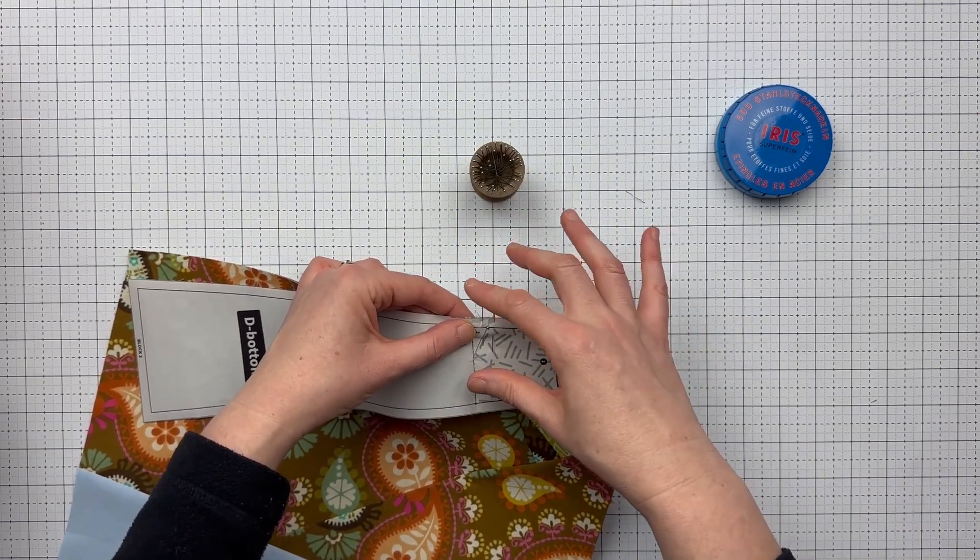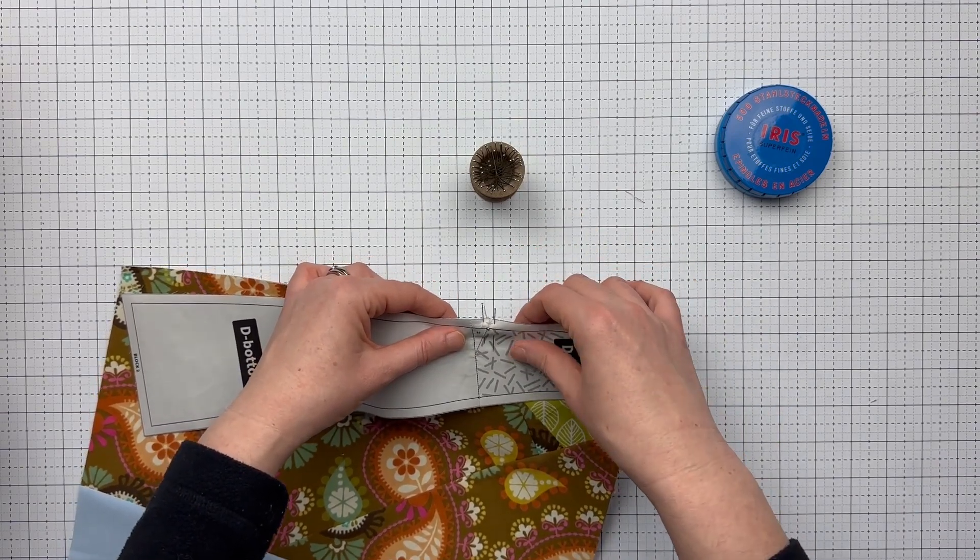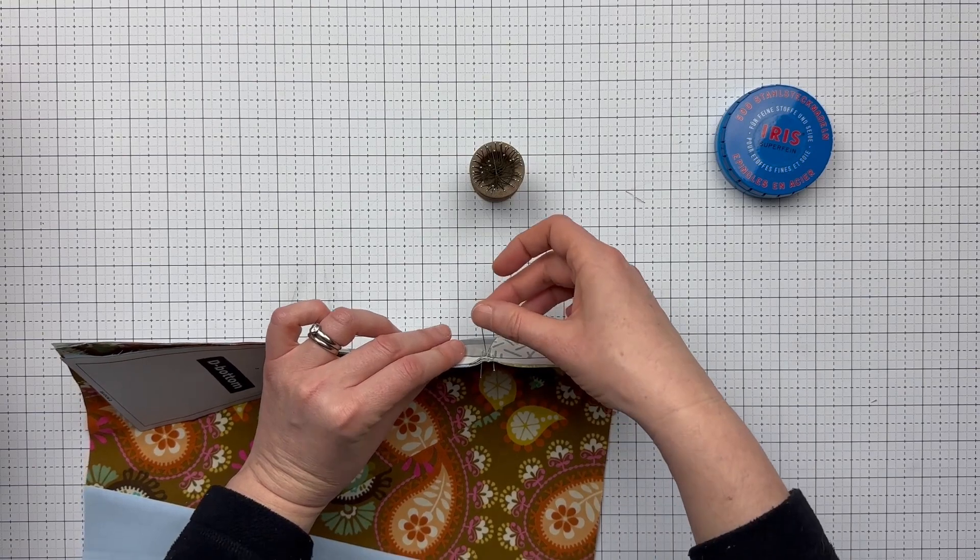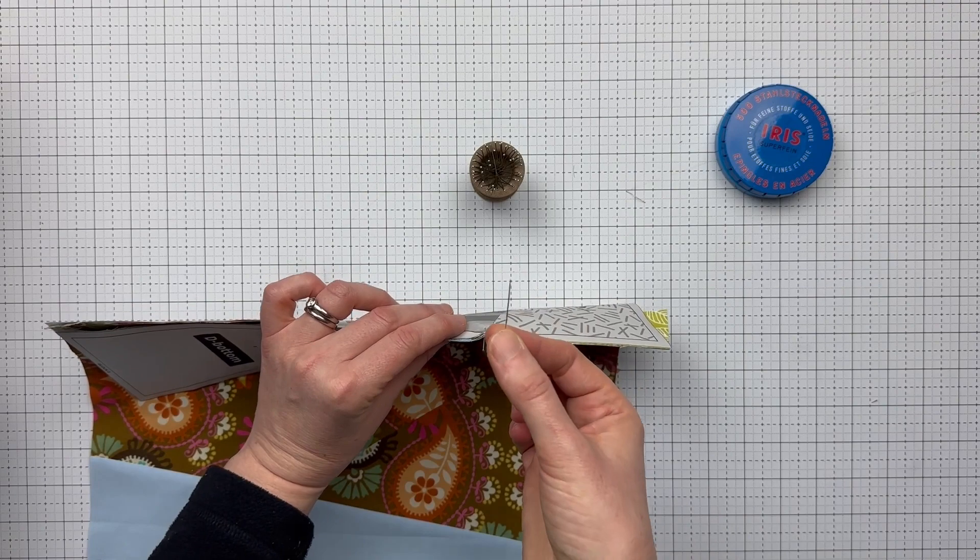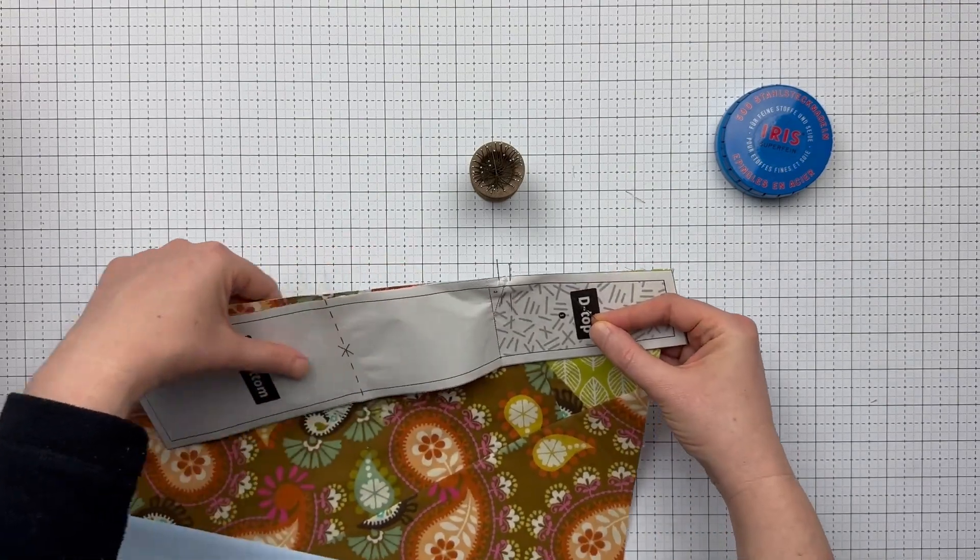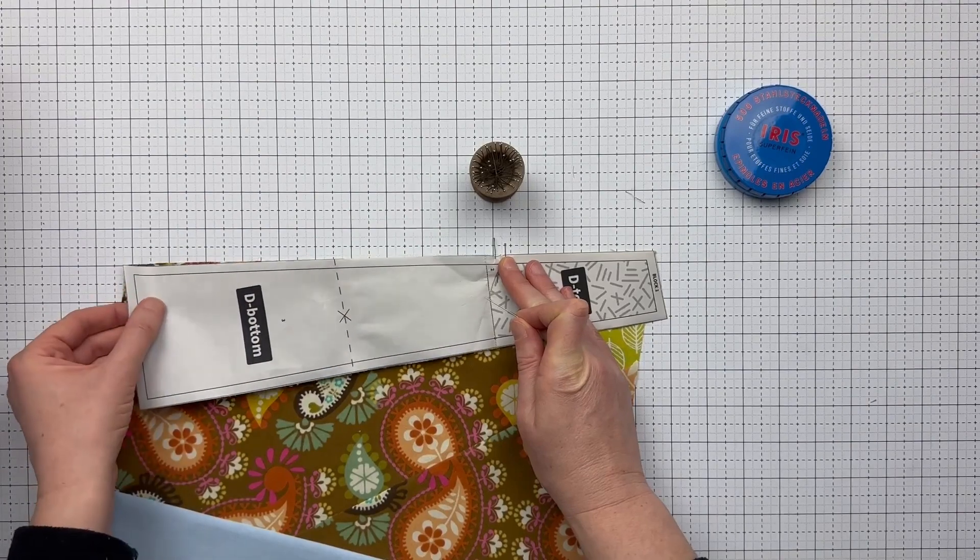Very important, once these two pins are in, securing the two pieces of paper and fabric together, make sure you remove the positioning pin. If you don't, it can get hung up in your machine.